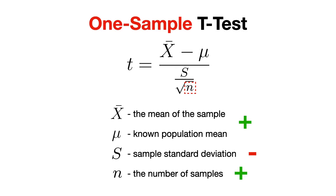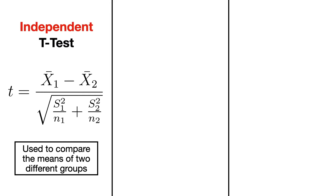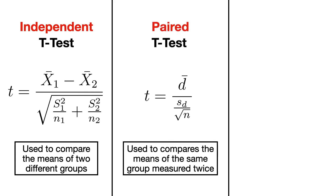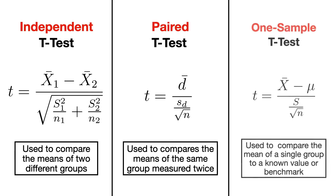So to recap this explanation: the independent t-test is used to compare the means of two different groups; the paired t-test compares the means of the same group measured twice; and the one-sample t-test compares the mean of a single group to a known value or benchmark. All of these tests follow a similar logic, comparing a t-value calculated from your data to a critical value to decide whether or not to reject the null hypothesis.